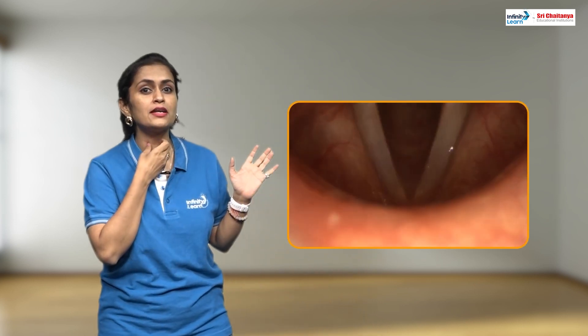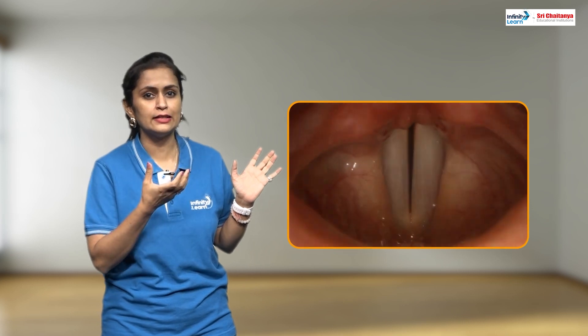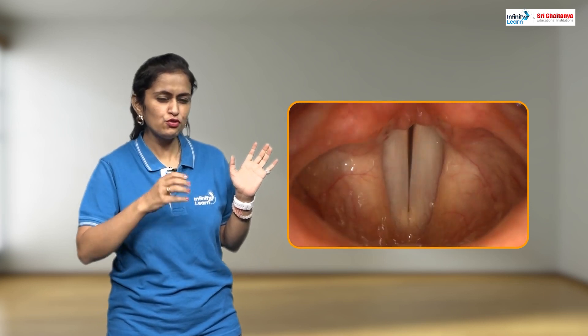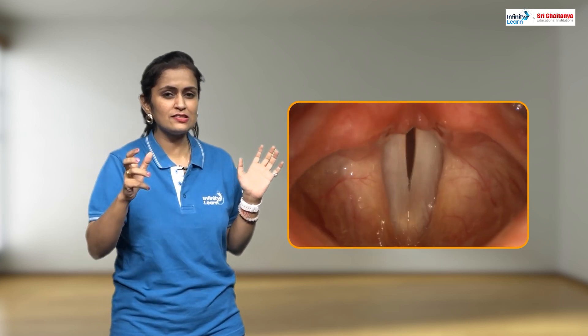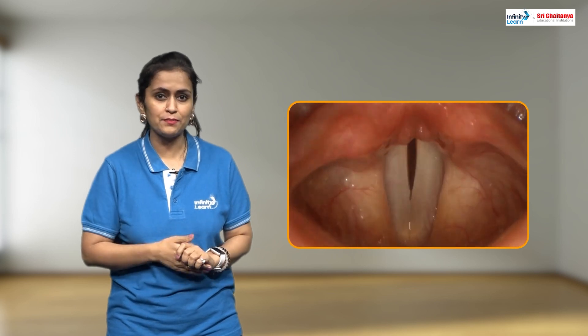Aisa kyu? To understand this, we usually have to ask science for help. The science behind it touches physics, chemistry, and biology — all three. So first, let's understand that the voice coming from our vocal cords changed — it became a little high-pitched and a little cartoonish. Aisa kyu hua?